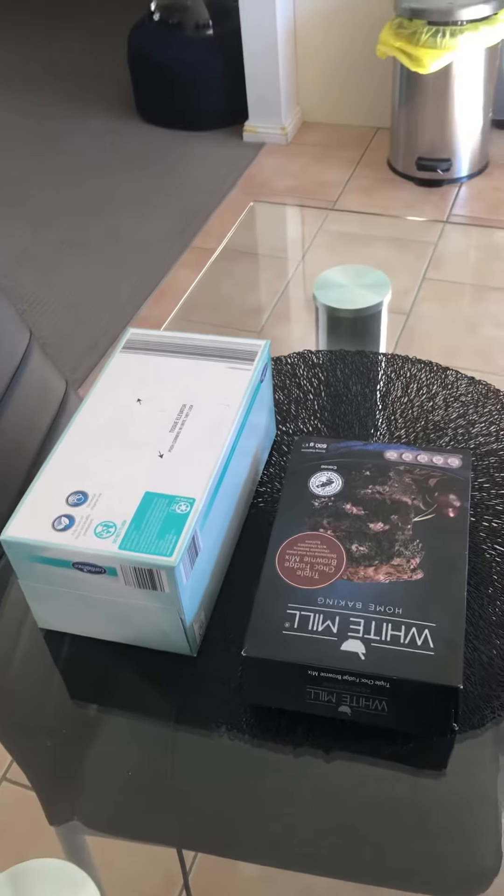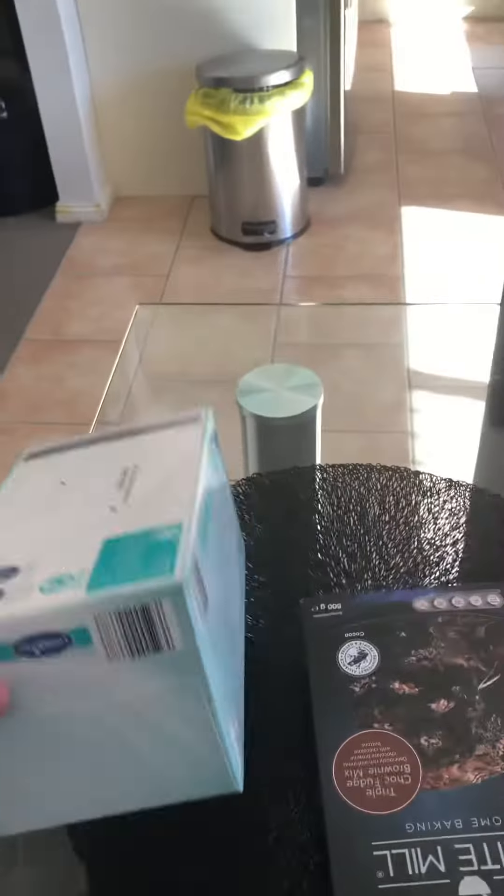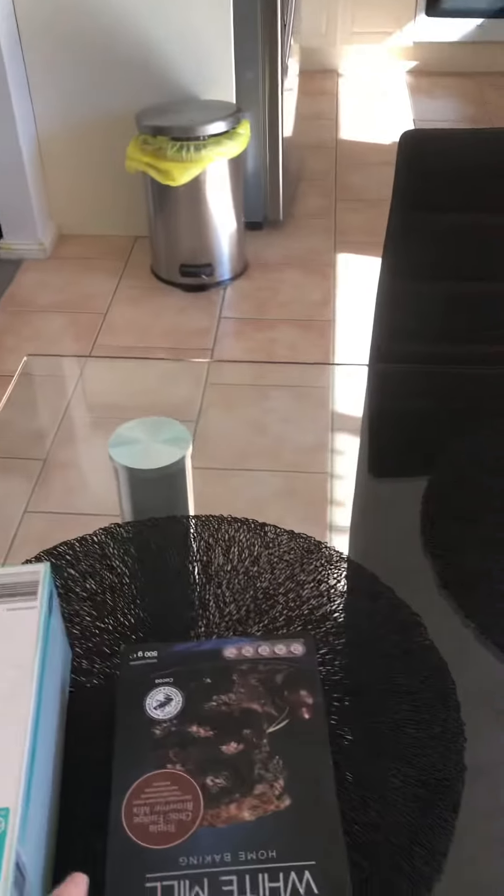Volume is the amount of space that an object takes up in our world. So as you can see here, I've got a tissue box and I've also got a brownie box.